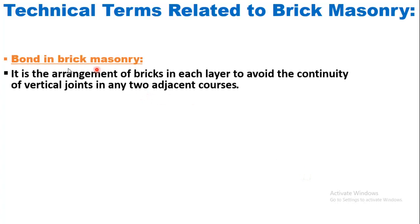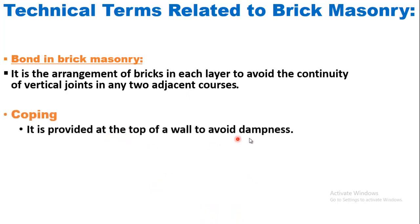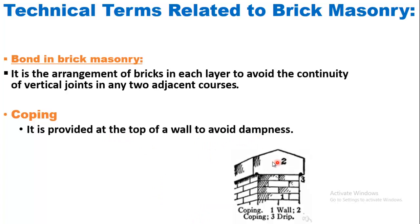Bond in brick masonry: it is the arrangement of bricks in each layer to avoid the continuity of vertical joints in any two adjacent courses. The detailed explanation of bonds will be discussed in an upcoming video, so please subscribe and press the bell icon. Last but not least, coping: it is provided at the top of the wall to avoid dampness and to prevent the penetration of moisture into the wall. That's all for today — please subscribe and press the bell icon for video updates.